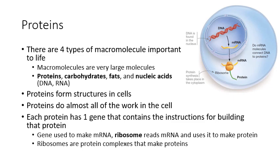Proteins are coded for by genes. On a chromosome, which is a large molecule of DNA, you have genetic information divided up into genes. Every gene codes for one protein — it has the instructions needed to build that protein. There are some genes with instructions to build RNA instead, but almost all genes are intended to build a protein.